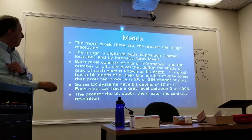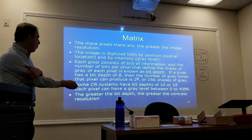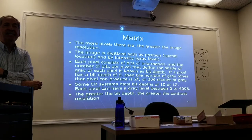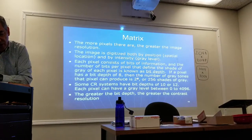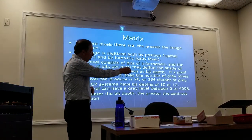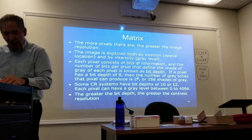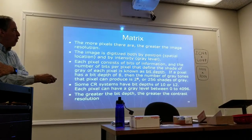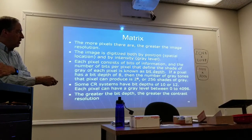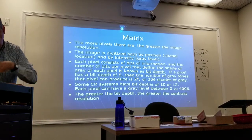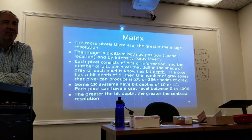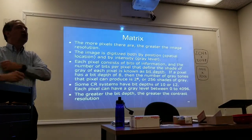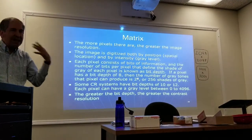Some CR systems have a bit depth of 10 or 12 — that means 2 to the 10th or 2 to the 12th. The greater the pixel depth, the greater the contrast resolution. 2 to the 12th represents 4096 shades of gray. The greater the image matrix size, the greater the spatial resolution. For example, a matrix of 2048 by 2048 has better spatial resolution than 1024 by 1024.